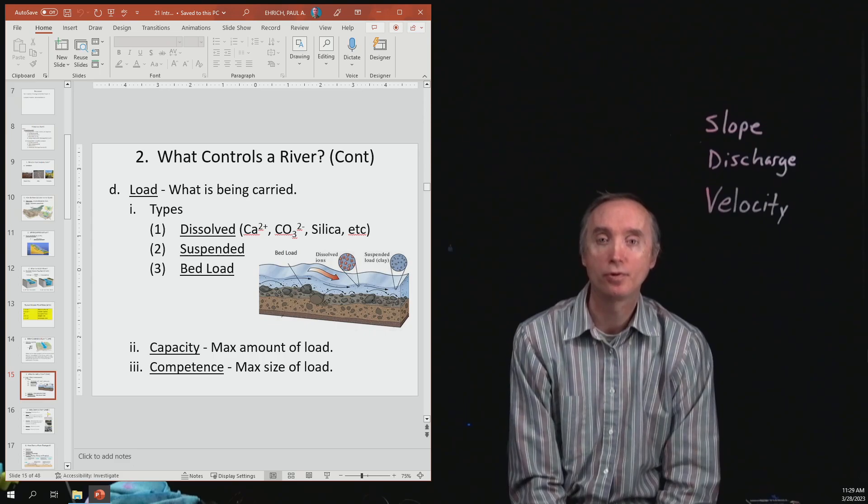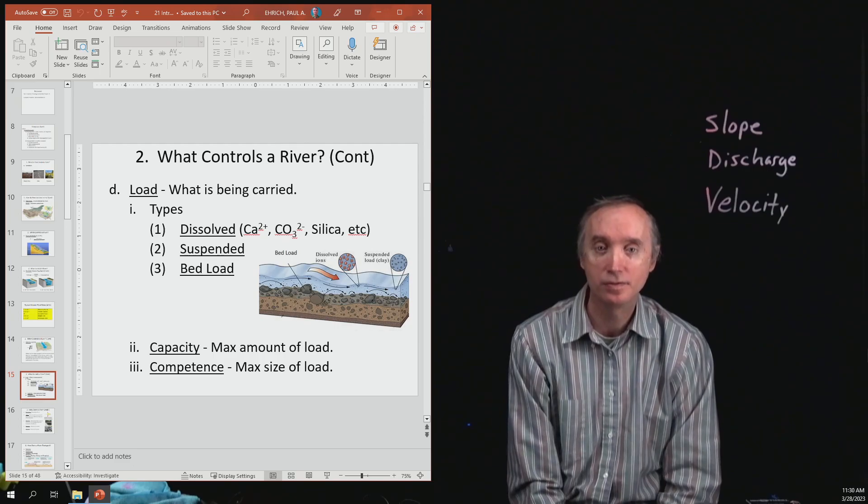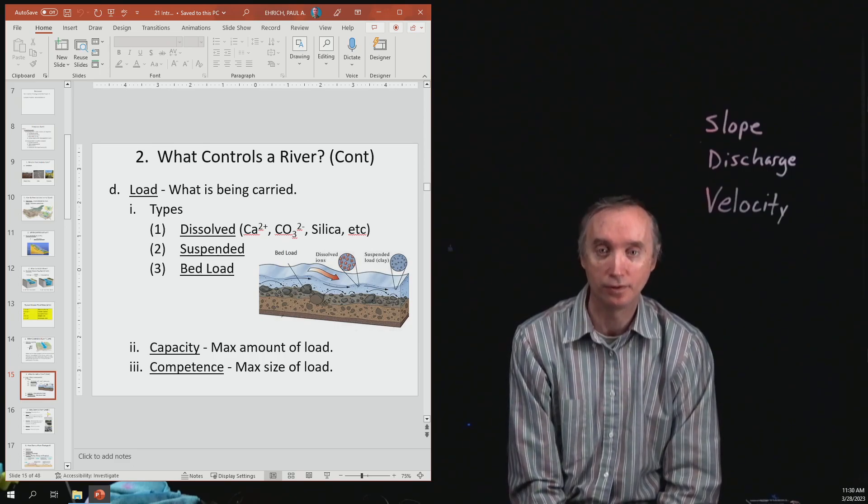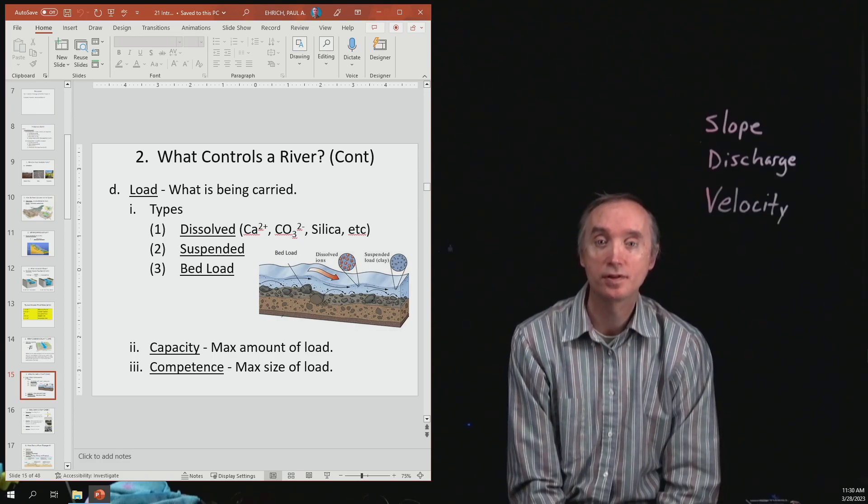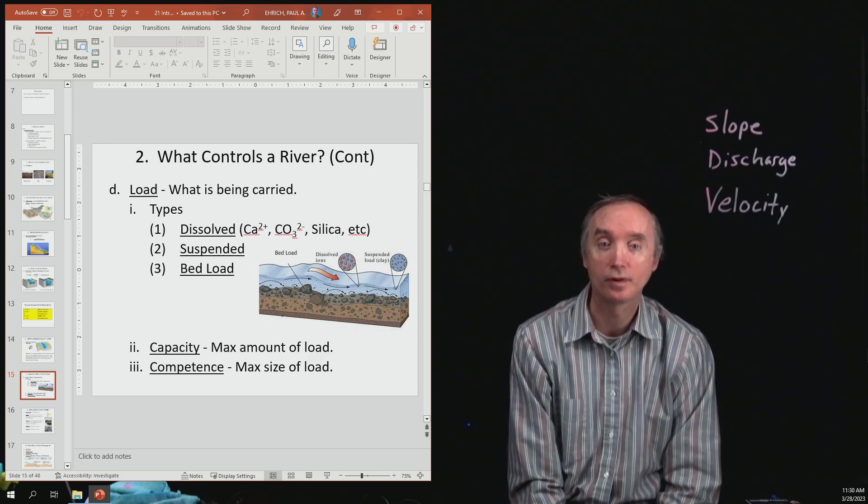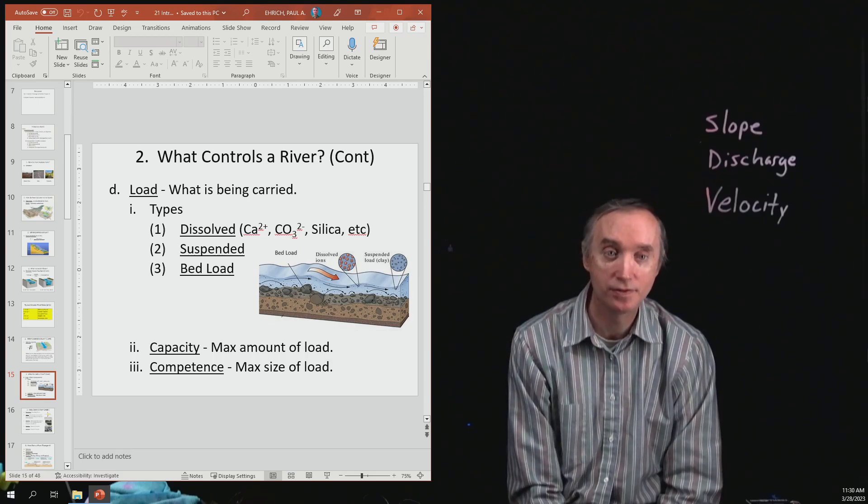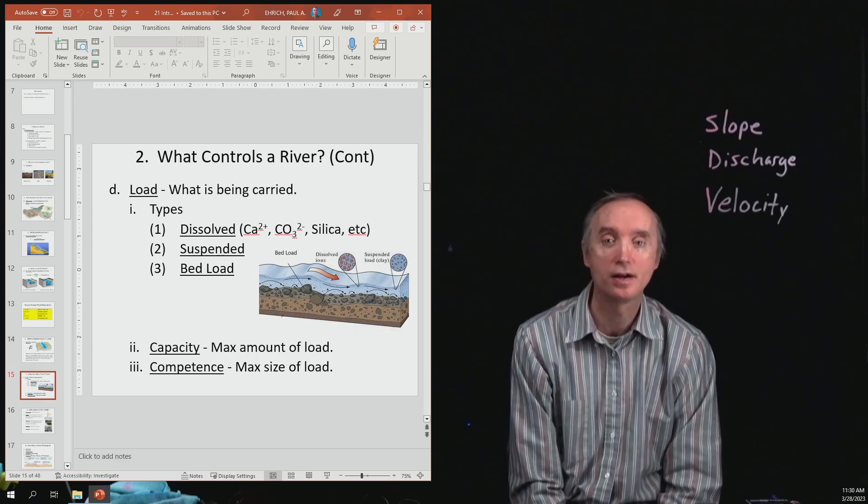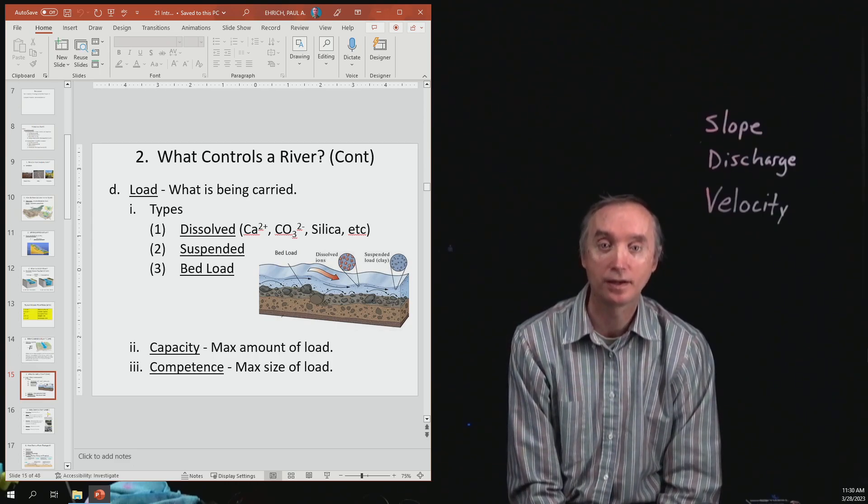Another property of load is the capacity, which is going to be the maximum amount of material that a river can have in it. This is going to depend on the velocity of the river and also on the size of the river. So the larger the size of the river, the more material that it can contain.